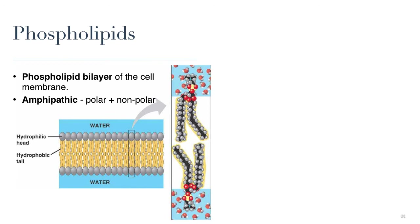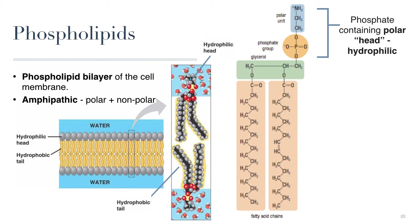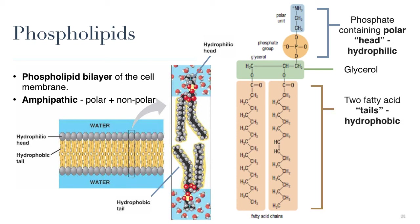A phospholipid molecule has two main parts: a polar head called the hydrophilic head because it is able to dissolve in water, and a nonpolar part made up of two fatty acid tails called the hydrophobic tails. The hydrophilic head is made up of a polar unit that contains a phosphate group bonded to a glycerol, which in turn is bonded to two fatty acid chains. These fatty acids can be saturated or unsaturated.